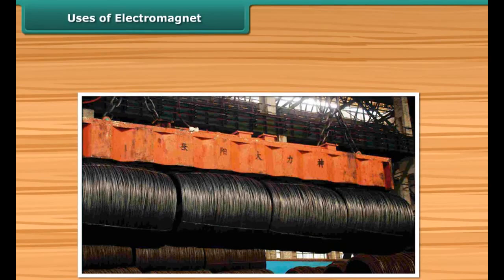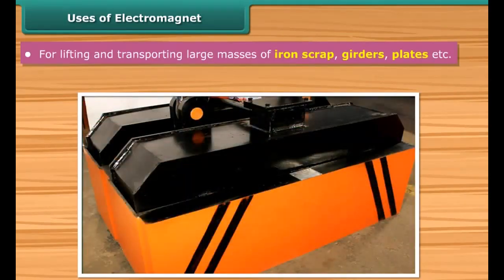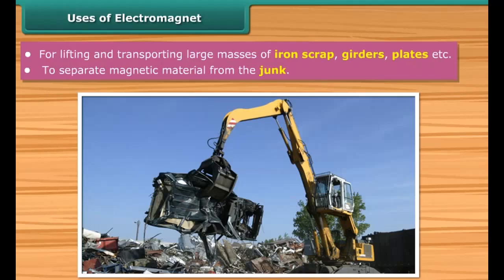You must have observed cranes lifting heavy iron scraps in scrapyards. These cranes make use of electromagnets for lifting and transporting large masses of iron scrap, girders, and plates. Electromagnets are also used to separate magnetic material from junk.